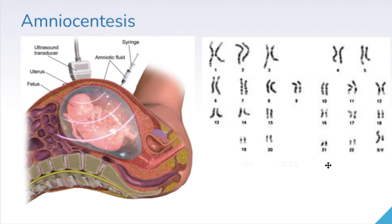For example, at the 21st location, if there's a third chromosome, we would have what's called trisomy 21, also known as Down syndrome. Trisomy just means three copies of a chromosome. You'll discover more of these genetic differences when we talk about that later in our unit.